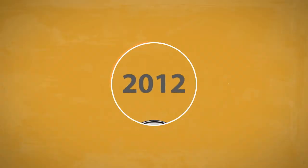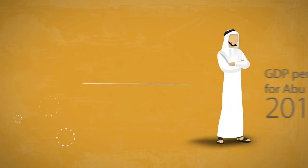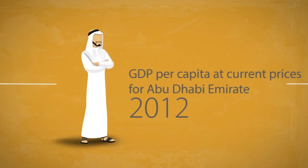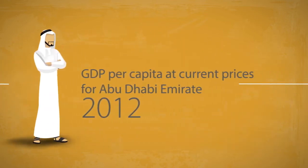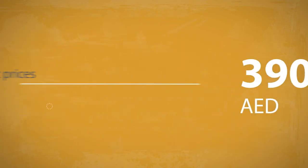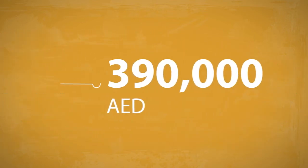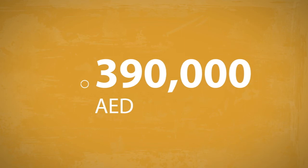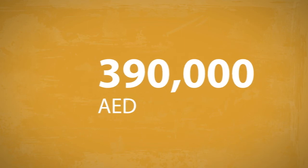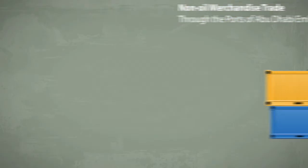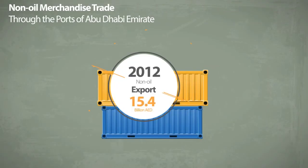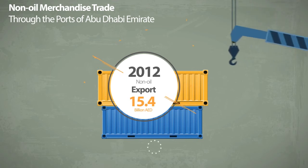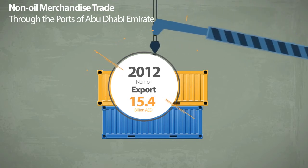GDP per capita at current prices for Abu Dhabi Emirates in 2012 was 390,000 dirhams. In 2012, Abu Dhabi's non-oil export was 15.4 billion dirhams.